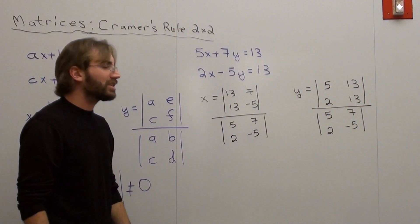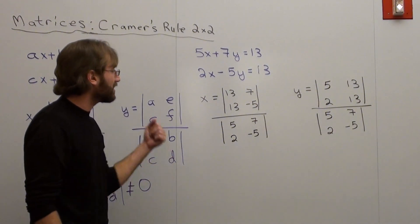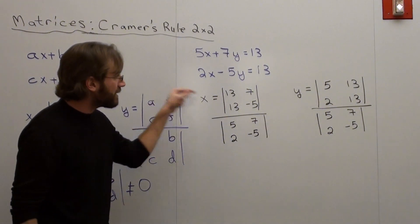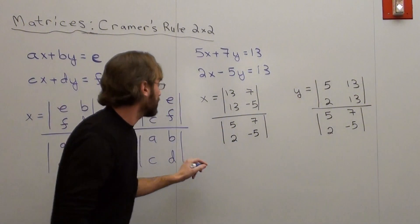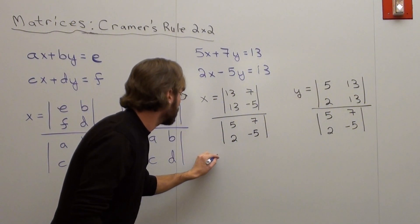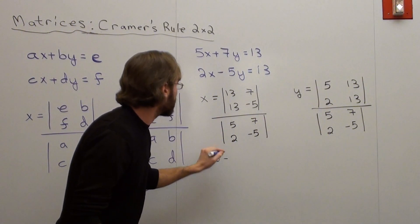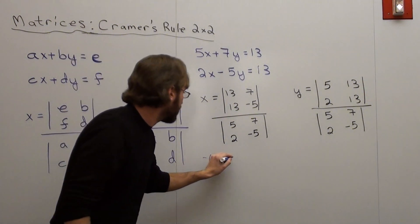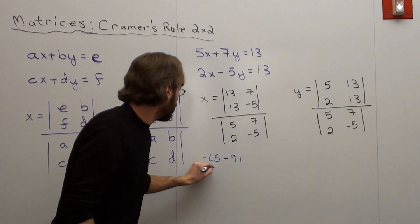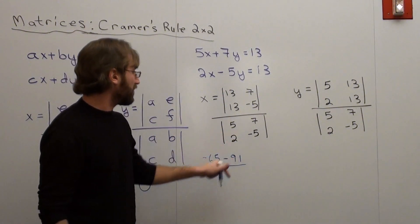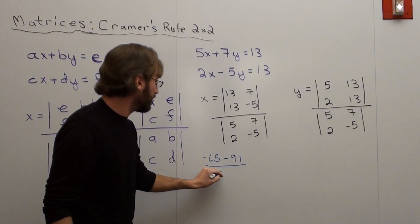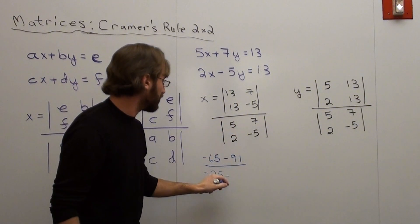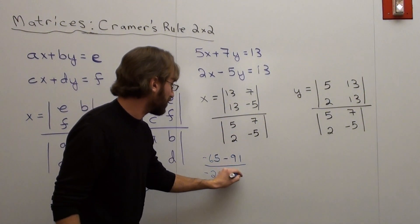I wish I knew what it is off the top of my head. 13 times 5 is 50, negative 65. So it's negative 65 subtracted by 13 times 7, that's 70 plus 21, that's negative 91, over 5 times negative 5 is negative 25, subtracted by 2 times 7, which is 14.